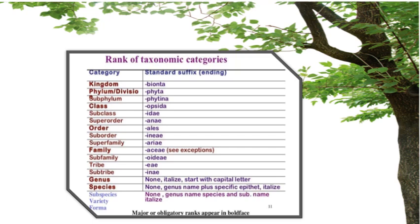In general, we have taxonomic categories described using standard suffixes. In kingdom we use '-bionta'; in phylum or division '-phyta'; class '-opsida'; subclass '-idae'; superorder '-anae'; order '-ales'; suborder '-ineae'; superfamily '-ariae'; family '-aceae'; subfamily '-oideae'; tribe '-eae'; subtribe '-inae'; genus is non-italicized starting with a capital letter; and species consists of genus name plus specific epithet, italicized. These are all the ranks of taxonomic categories and standard suffixes used with different taxa or groups of plants.